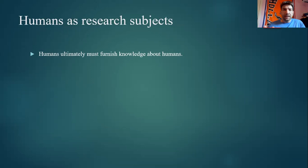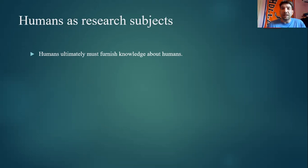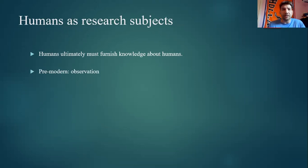Now, a brief history. Ultimately, the reason we're talking about this is because humans have to furnish knowledge about humans. You want to try a vaccine out — you can do all you want with computers and animal studies, but at some point it's got to go into somebody's body and you're running an experiment on a human subject. Keep that in mind, because Akbar has something to say at the very end about that.